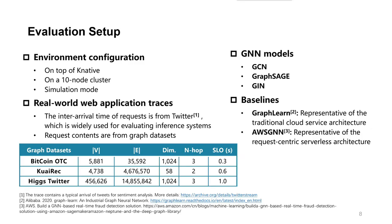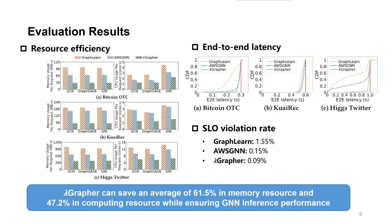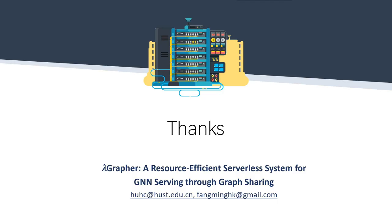We compare LambdaGraph with the state-of-the-art on real-world traces and classic GNN models. Results show that LambdaGraph can save an average of 61.5% in memory resource and 47.2% in computing resource while ensuring GNN inference performance. Thanks for watching.